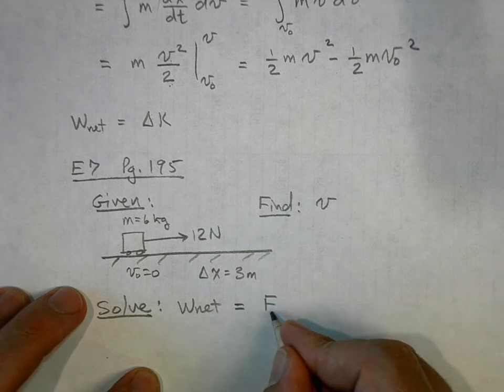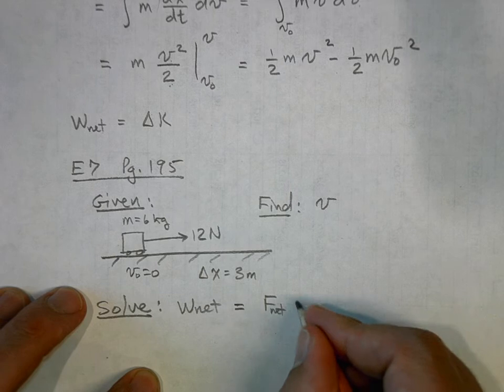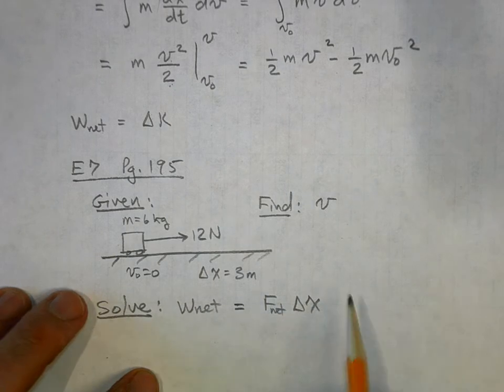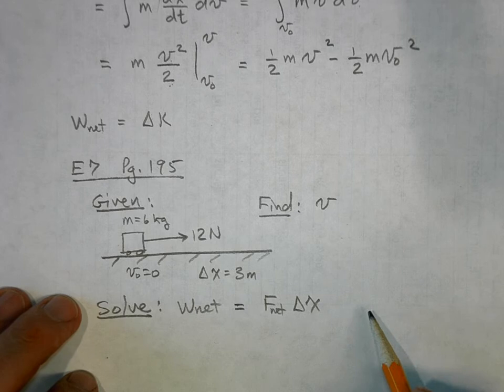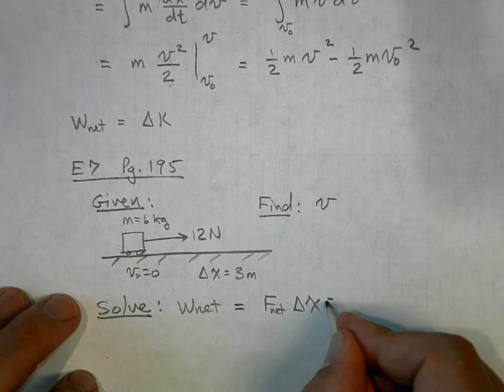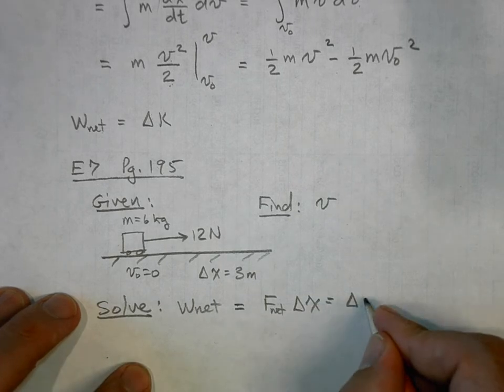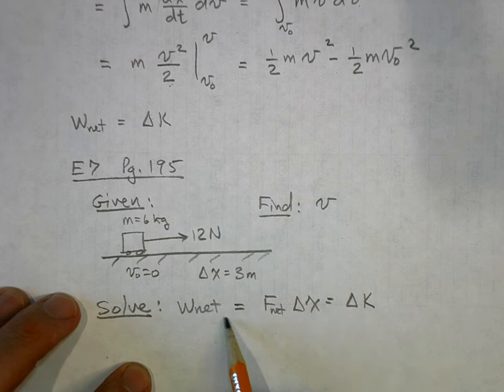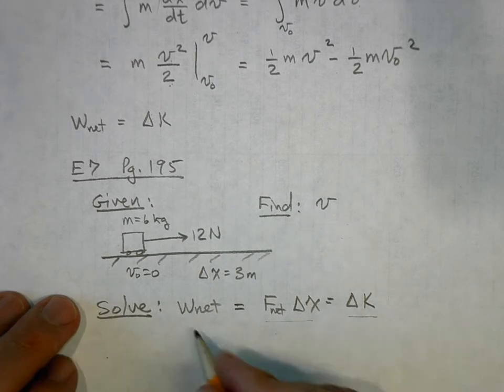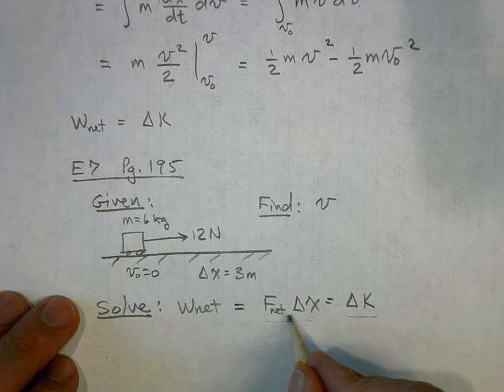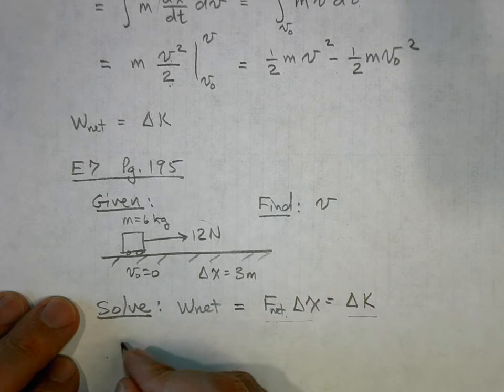force—the net force—times the displacement. Now everything's all lined up here, so I'm not going to worry about the dot product or anything like that. And this is going to be equal to the change in kinetic energy, the work energy theorem. Well, so now I can say the net force looking at this picture is 12 newtons, the displacement is 3 meters.